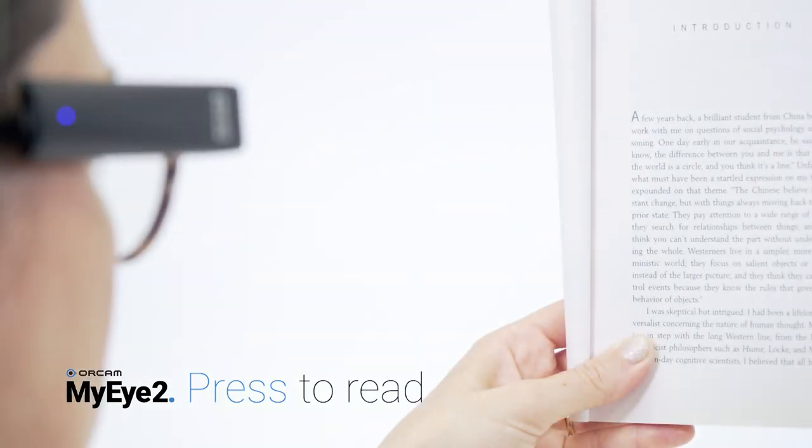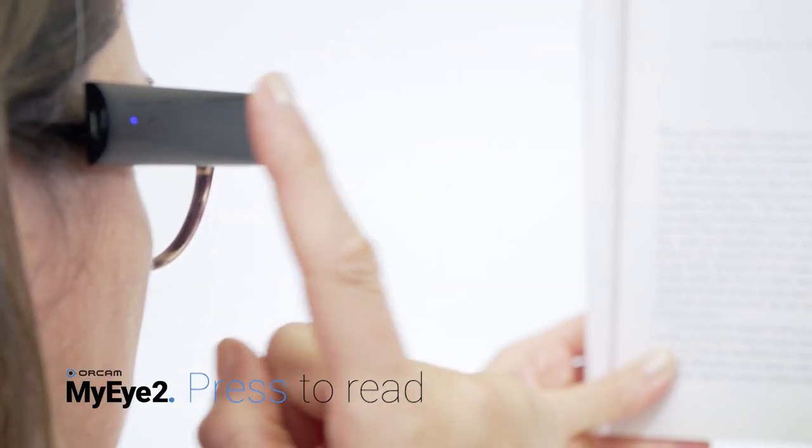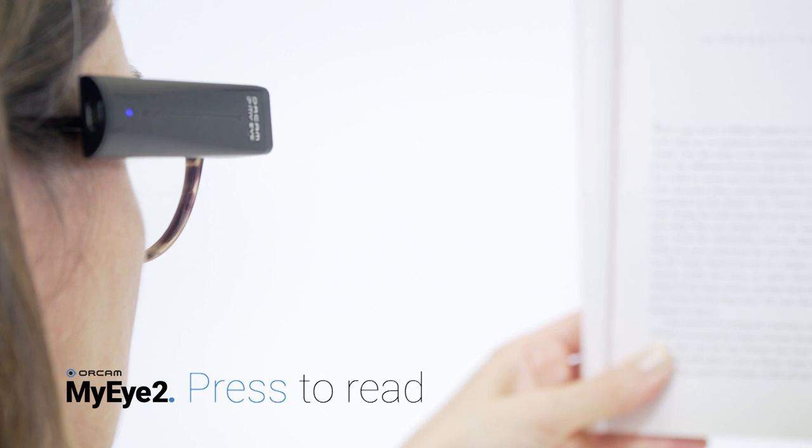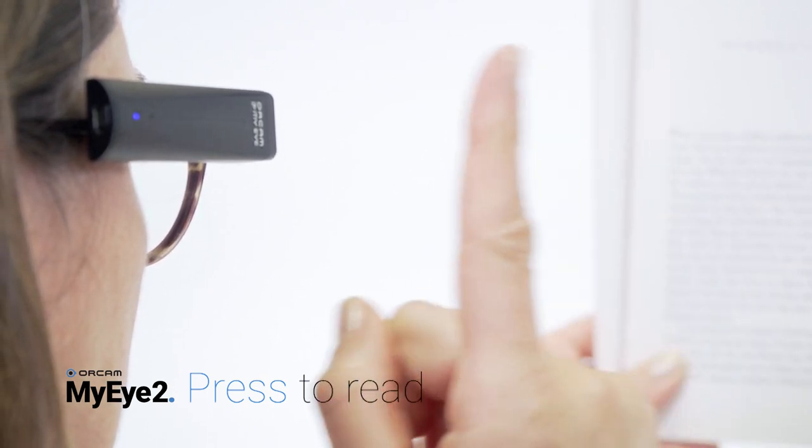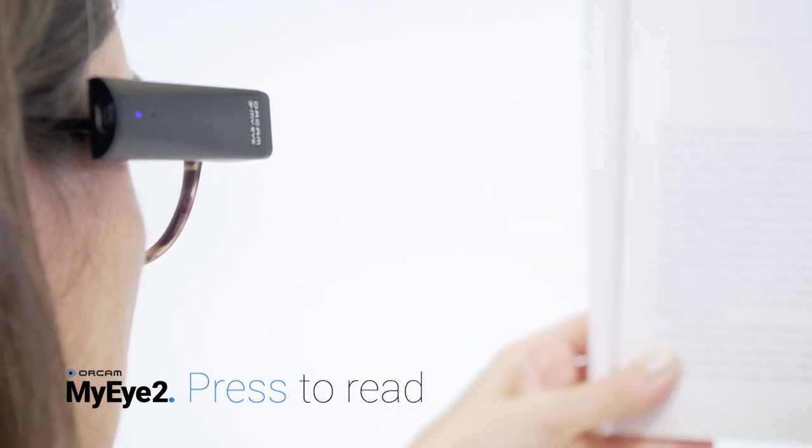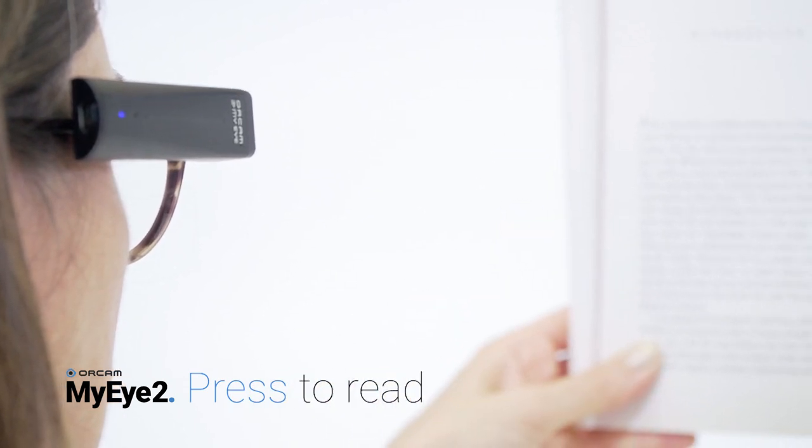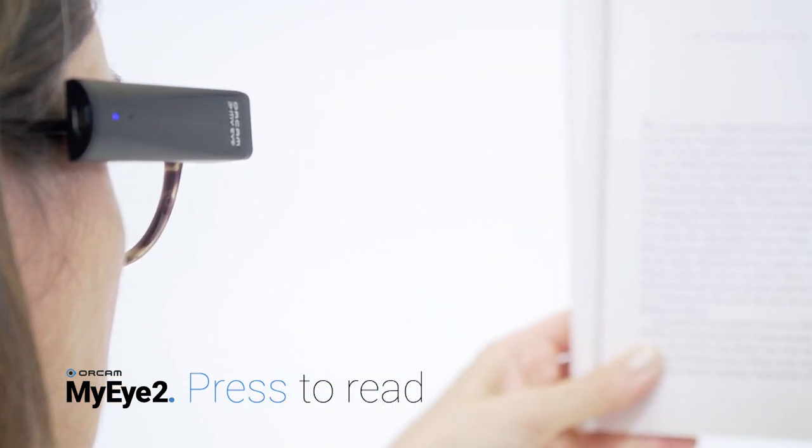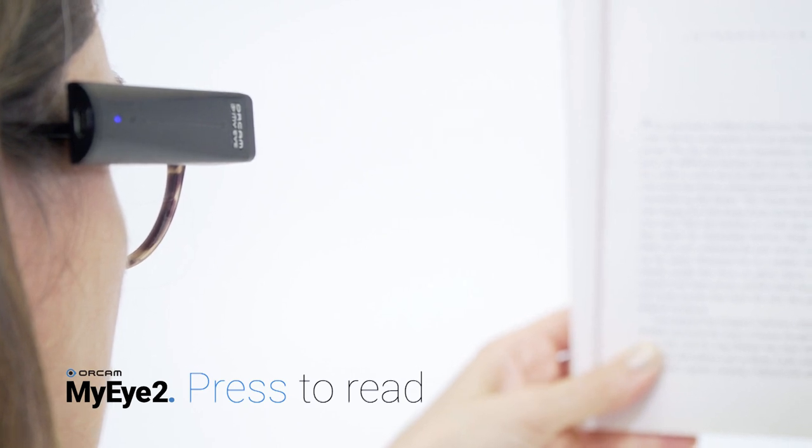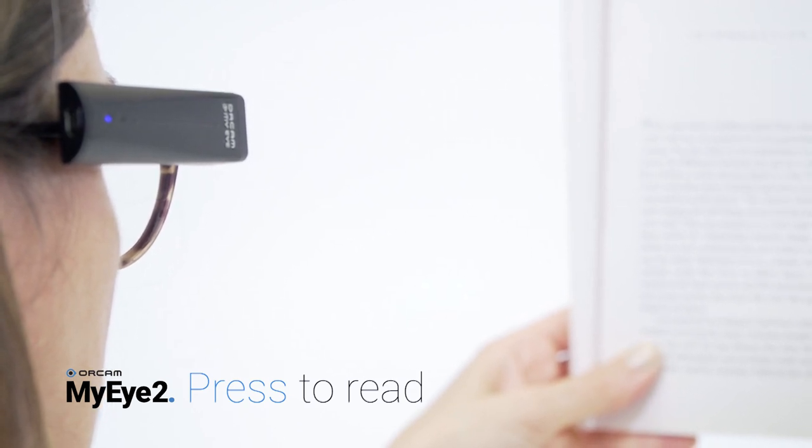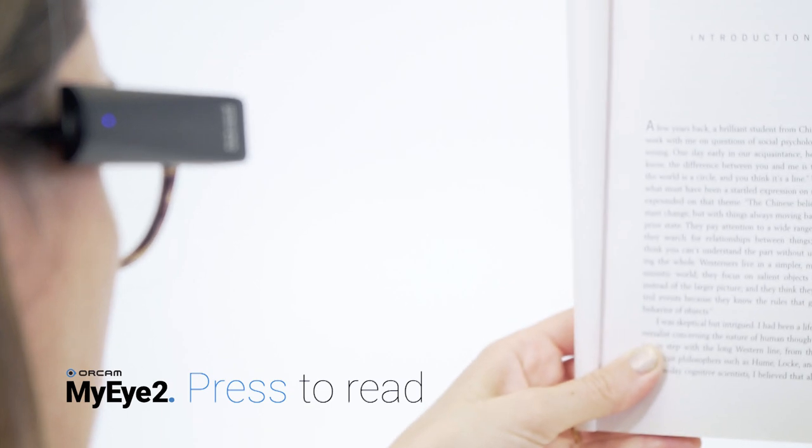Press the touch bar on the device when you wish to read one or two full pages or a sign. Face the text you wish to read at eye level. Press the touch bar. You will hear a click, followed by a camera shutter sound, and beeps as the device processes the picture. Your device will begin reading the text and sound a chime when it is finished.